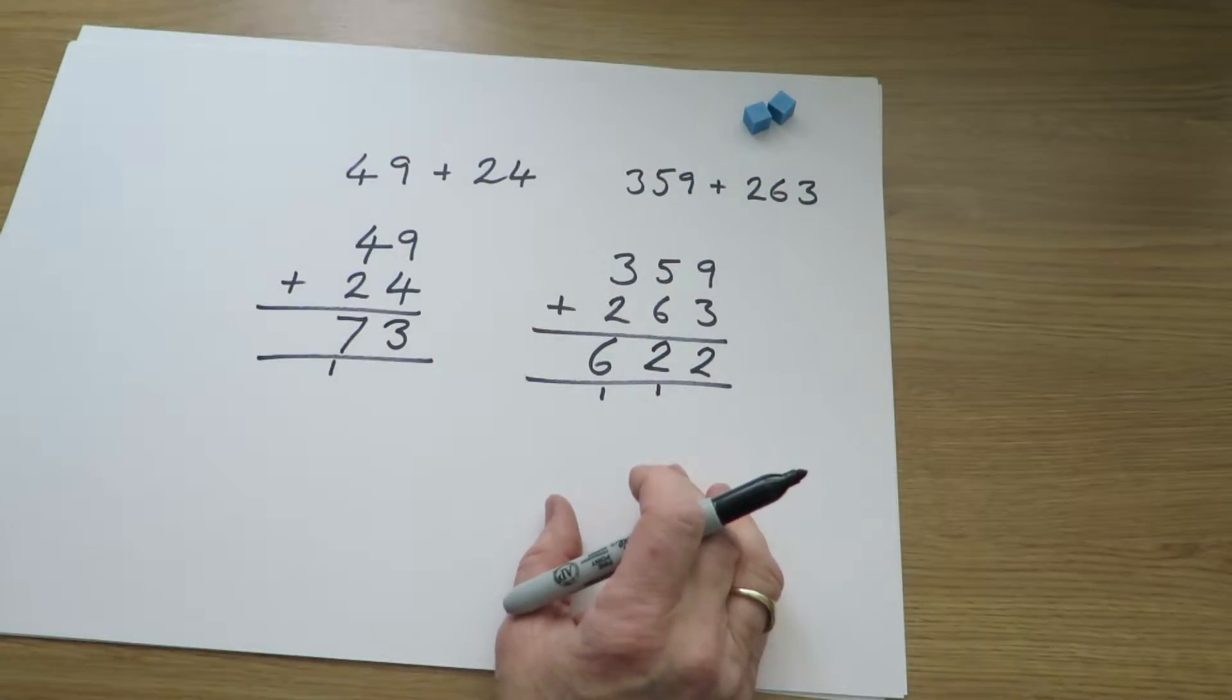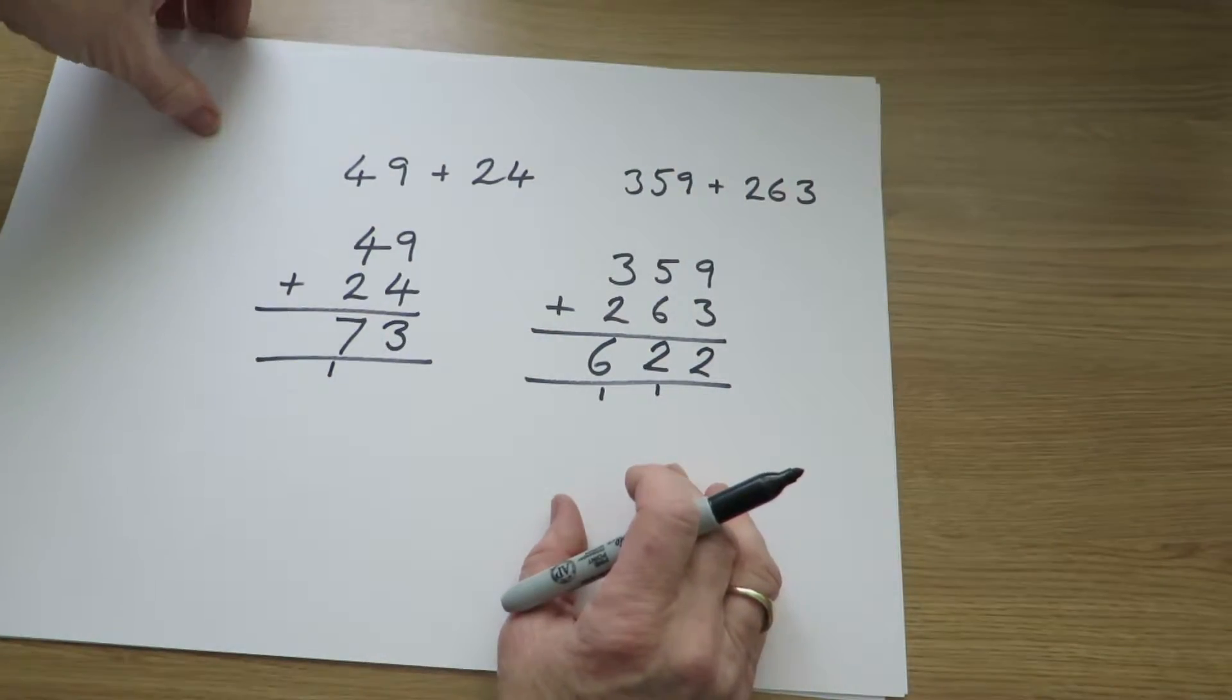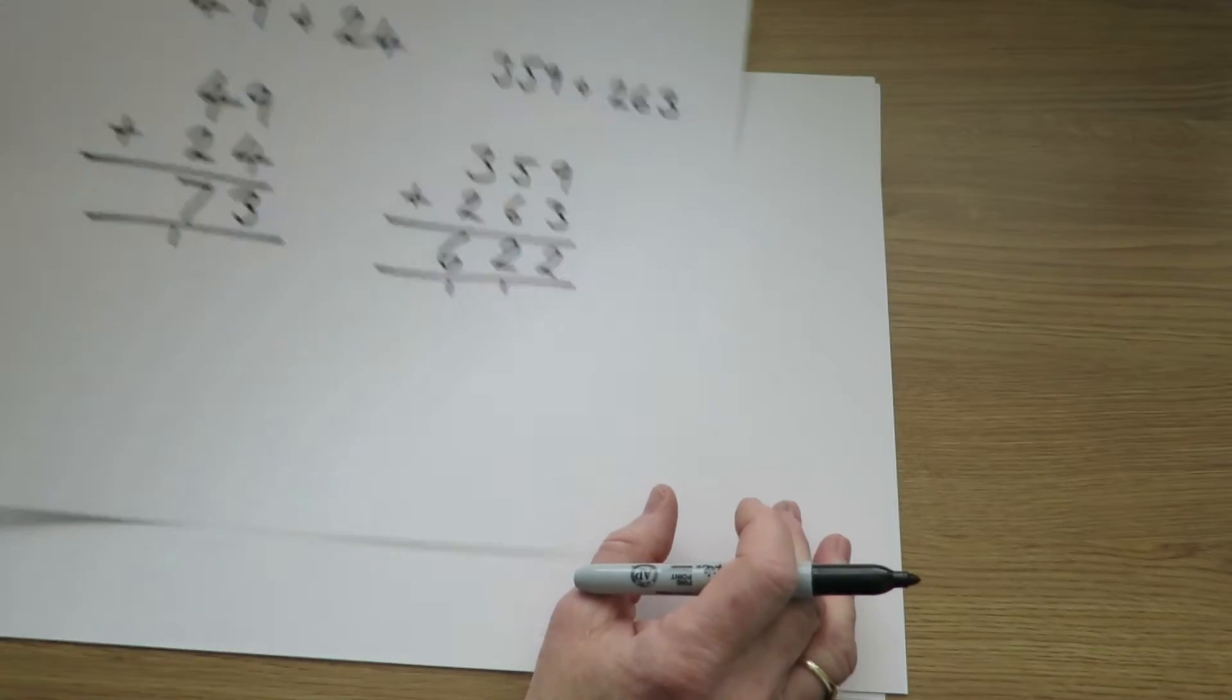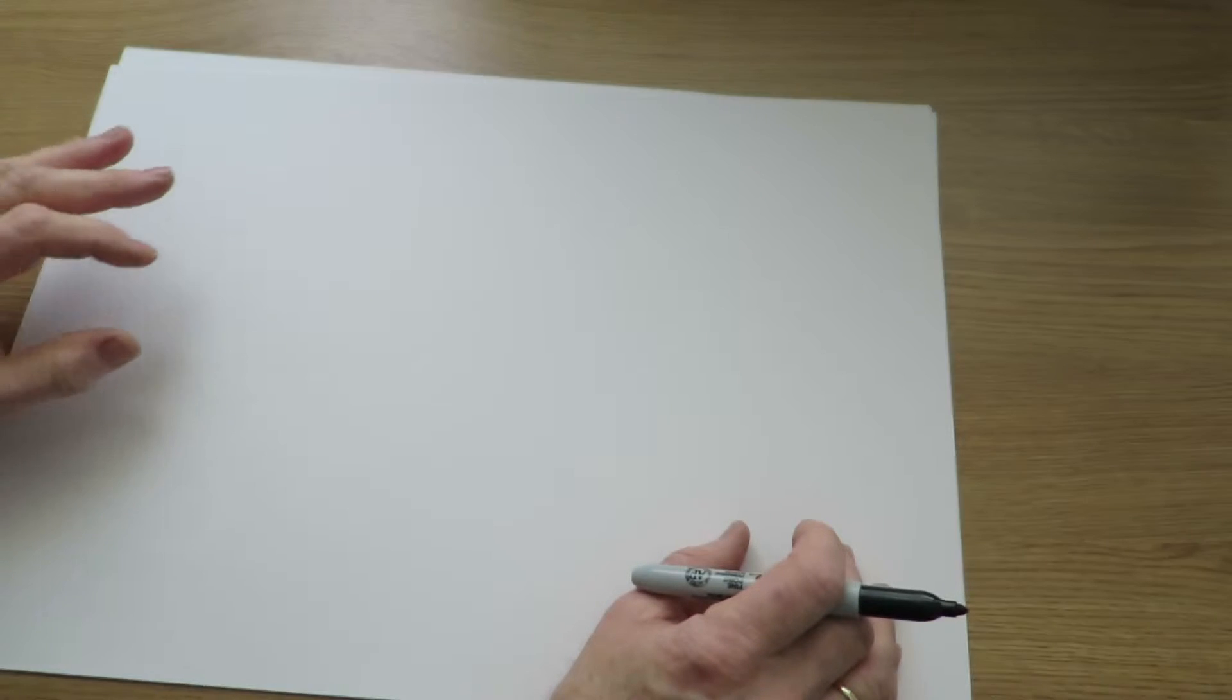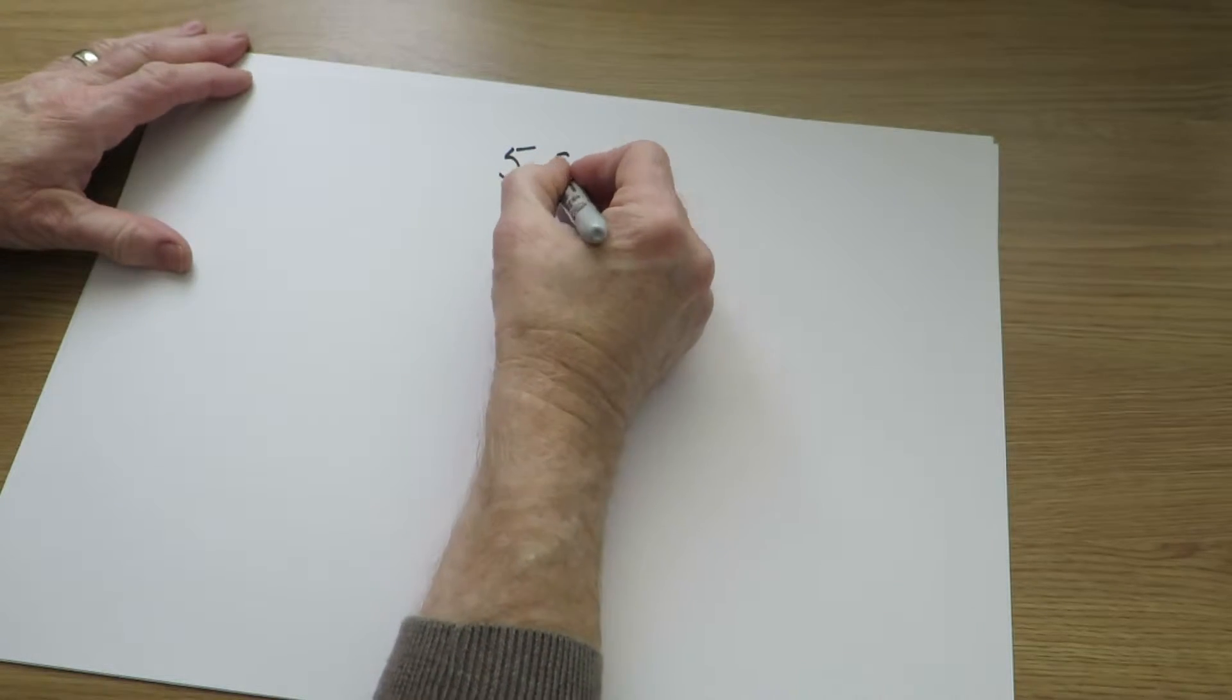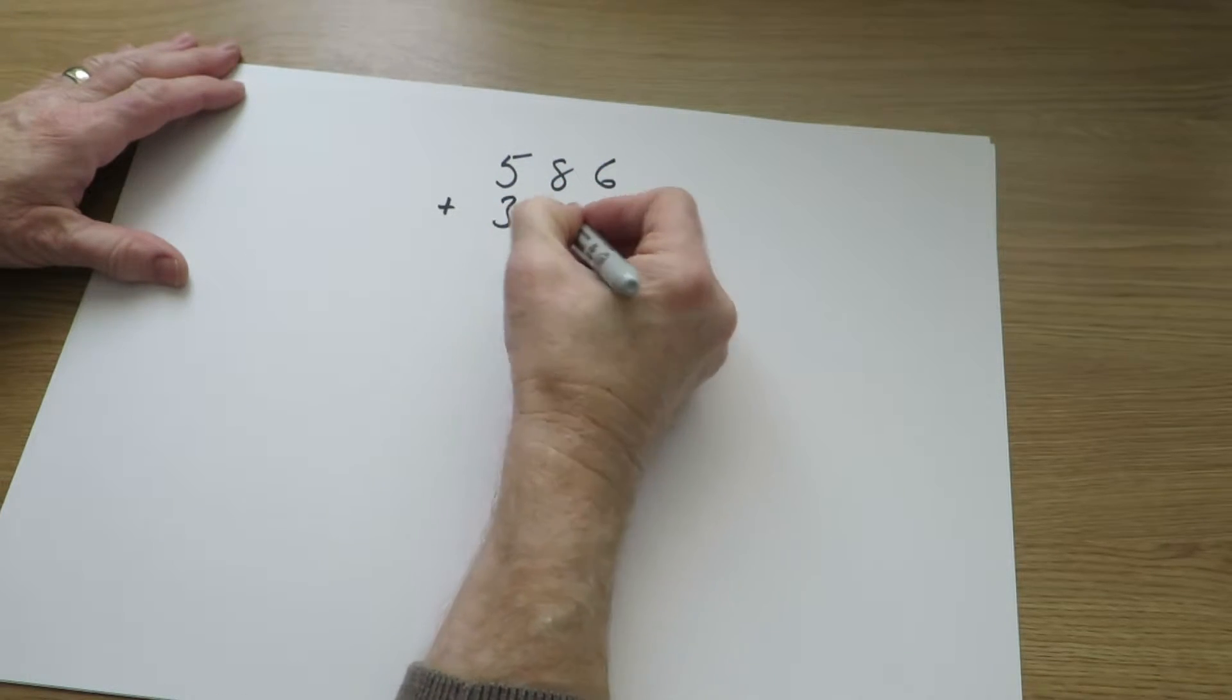It's much easier for the children once they can manage without the equipment. They can simply use their knowledge of number bonds, but follow the pattern that the equipment has shown them. So if we look at a question like 586 add 375.